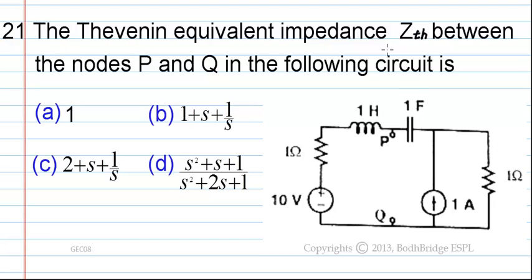The Thevenin Equivalent Impedance Z_TH between the nodes P and Q in the following circuit is: option A: 1, option B: 1 plus s plus 1 divided by s, option C: 2 plus s plus 1 by s, option D: s squared plus s plus 1 divided by s squared plus 2s plus 1.